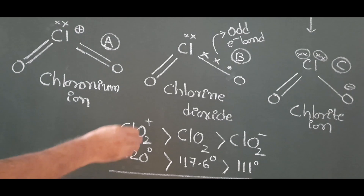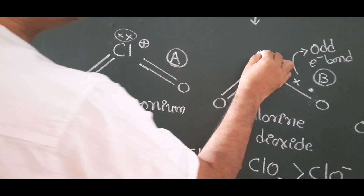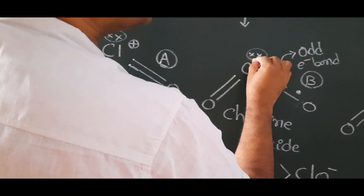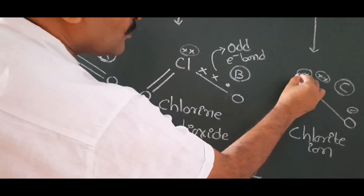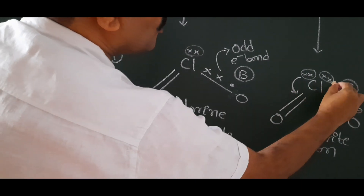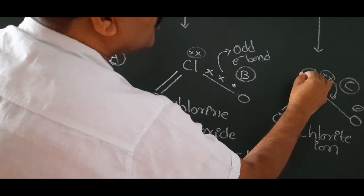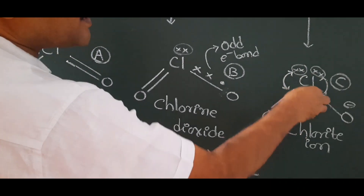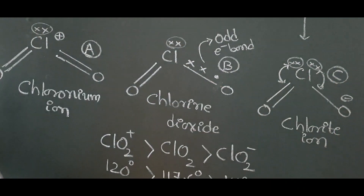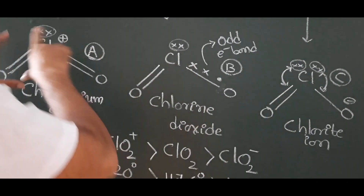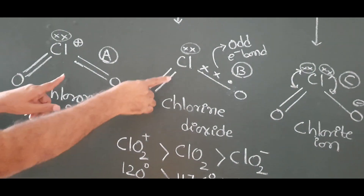ClO₂⁺ has one lone pair, ClO₂ has one lone pair, and ClO₂⁻ has two lone pairs. Because of the greater number of lone pairs, lone pair–lone pair and lone pair–bond pair repulsions minimize the bond angle. So ClO₂⁻ has the lowest bond angle among the three.